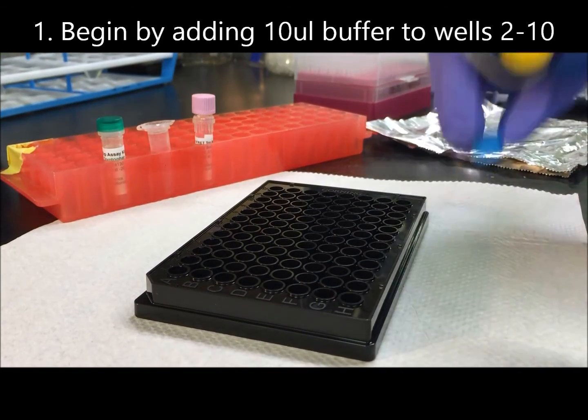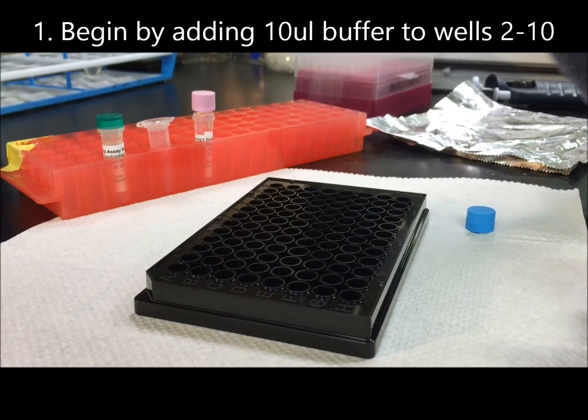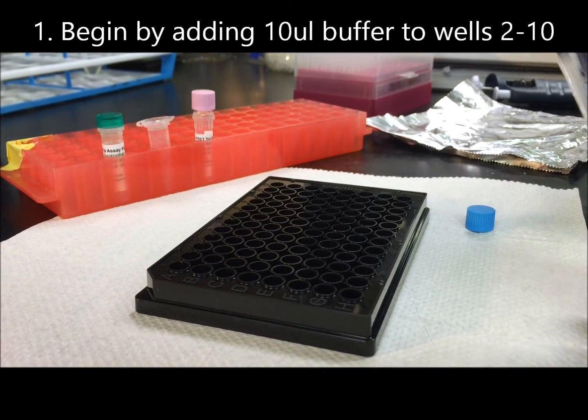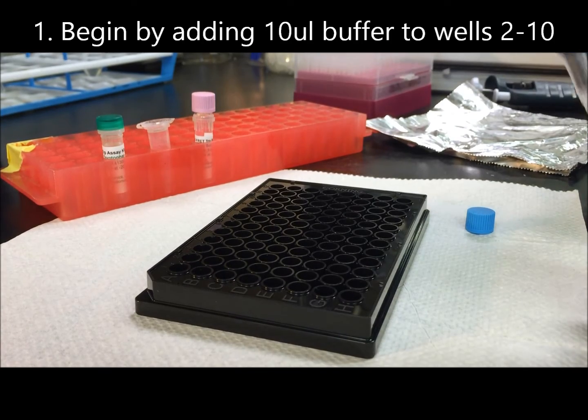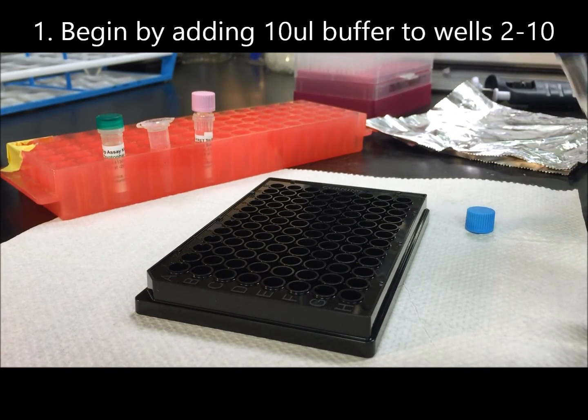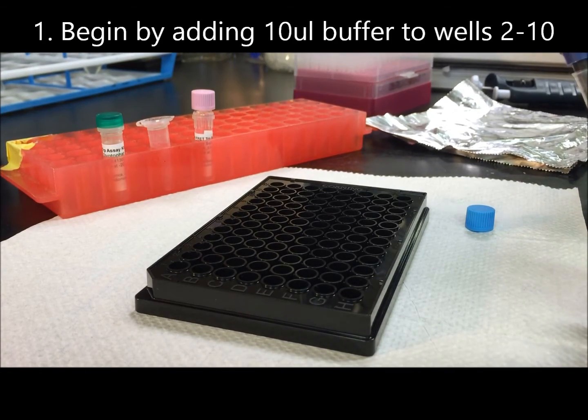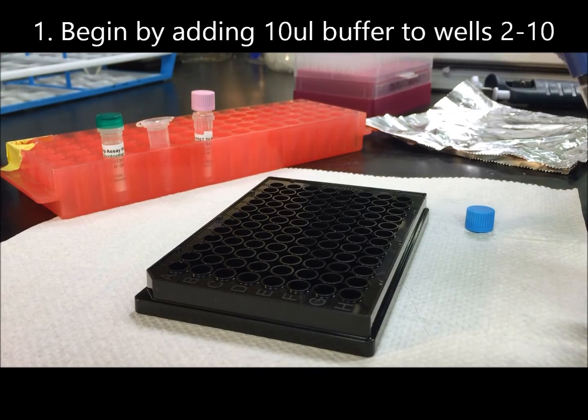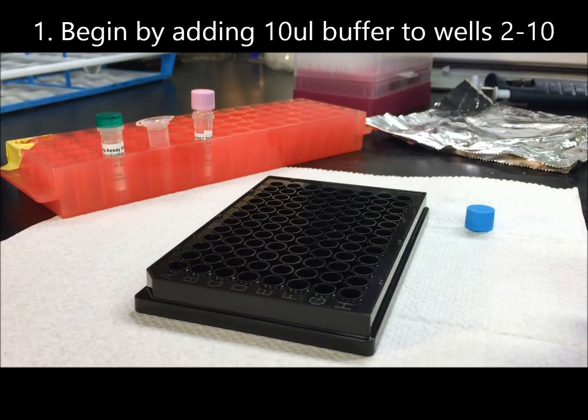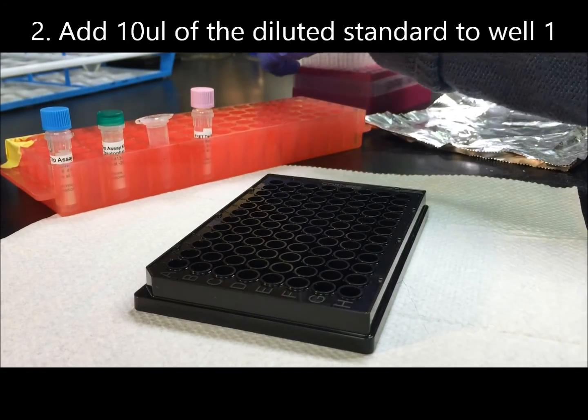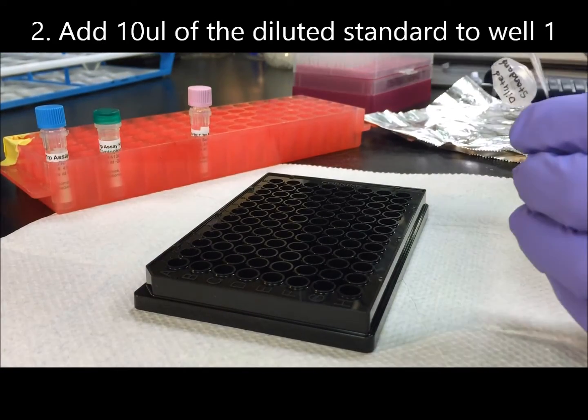Begin by adding 10 microliters of buffer to wells 2 through 10. Beforehand, you should have prepared a diluted standard according to the protocol. Add 10 microliters of this diluted standard to well 1.